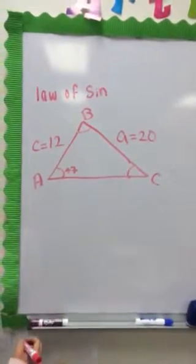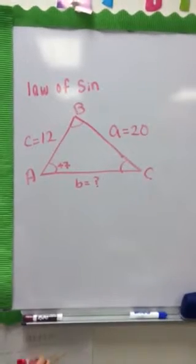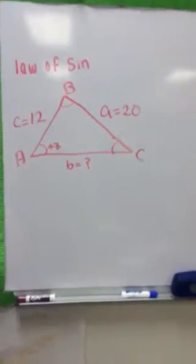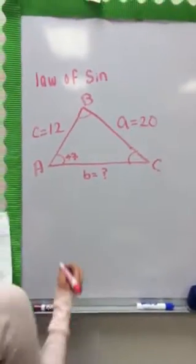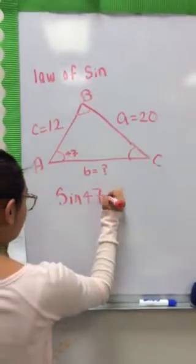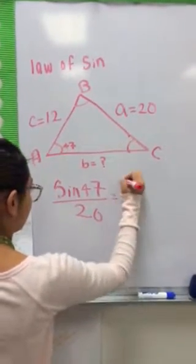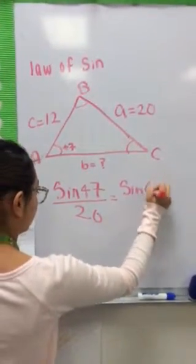We are going to start by drawing the triangle. We are looking for angle C, so sin 47 over 20 equals sin C over 12.